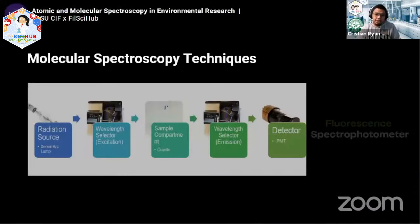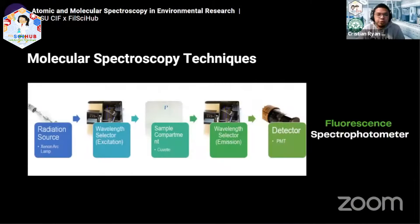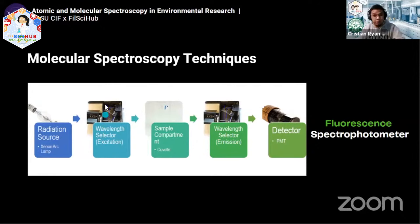The next technique is the fluorescent spectrophotometer. It's quite similar to the setup of the UV-Vis, but instead of just having one wavelength selector, we have two.